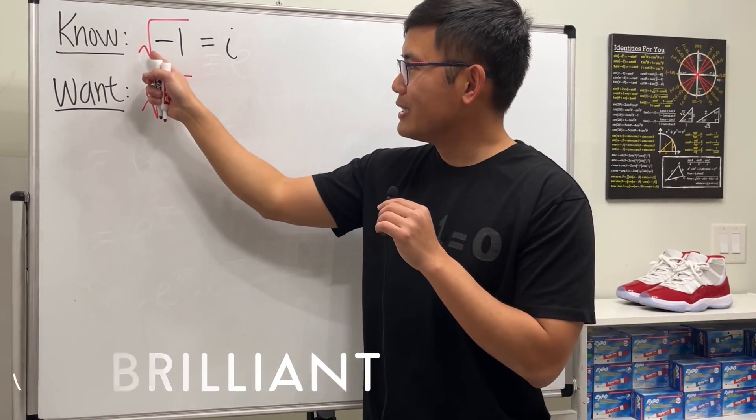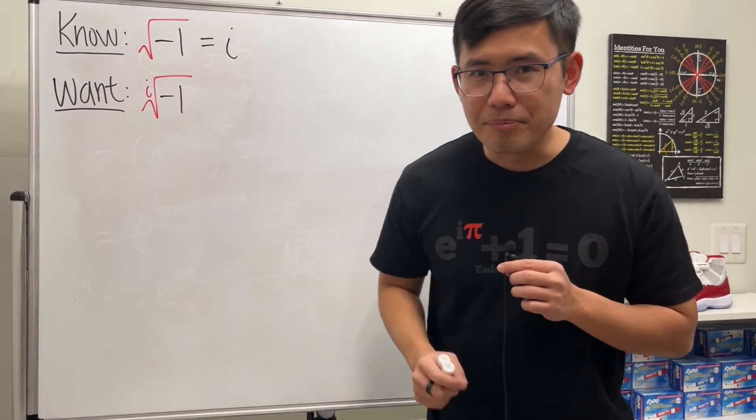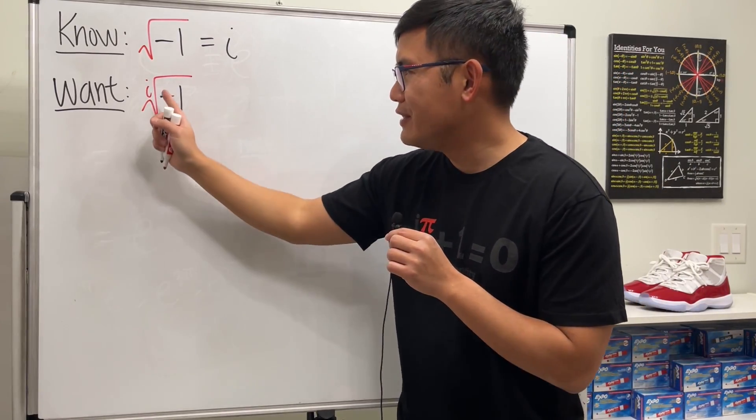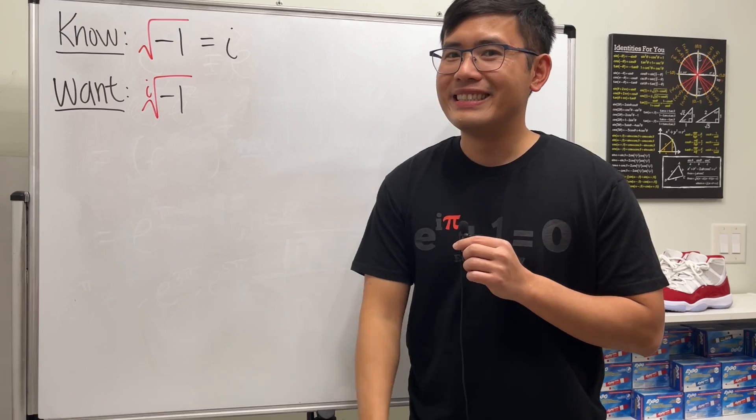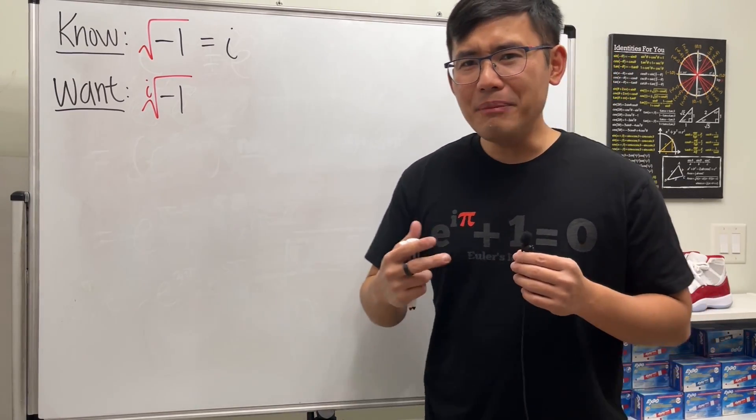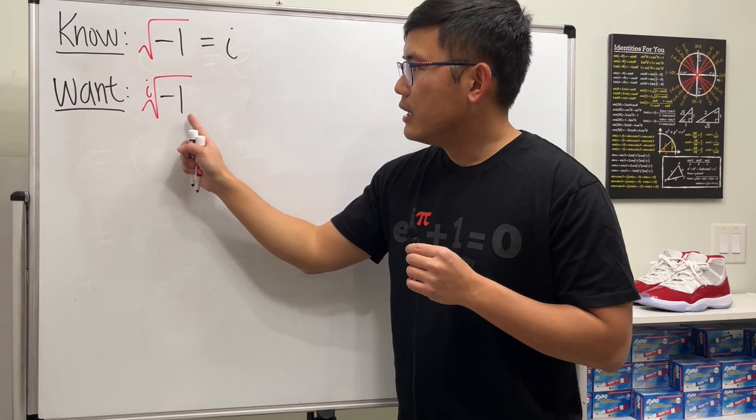As we all know, when we have the principal square root of negative 1, we get the imaginary unit i. But have you ever thought about what if we have the i-th root of negative 1? Well, yes, we can use this shirt to solve this right away, but let me give you some detail first.